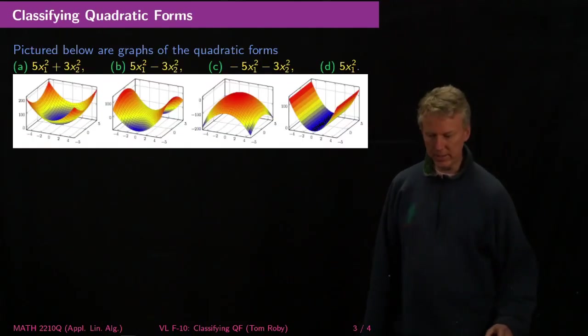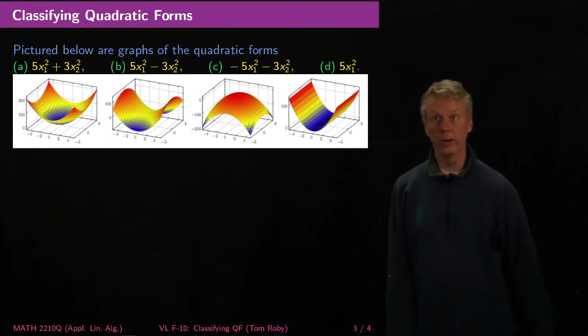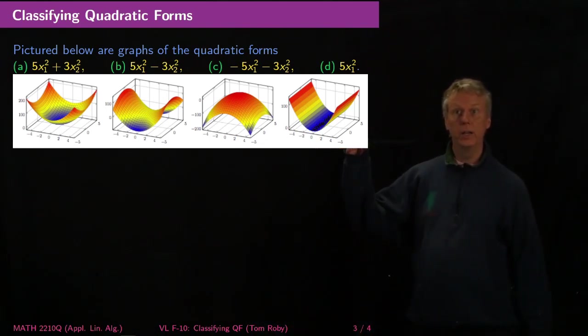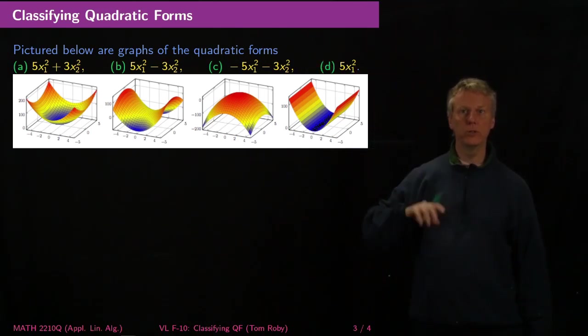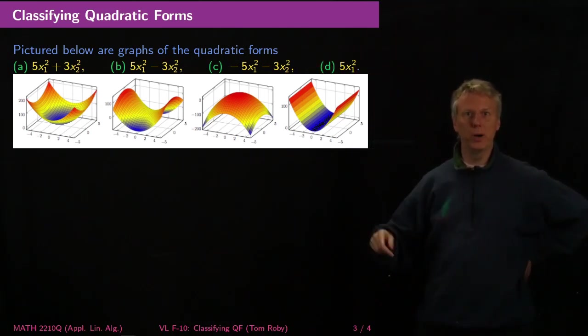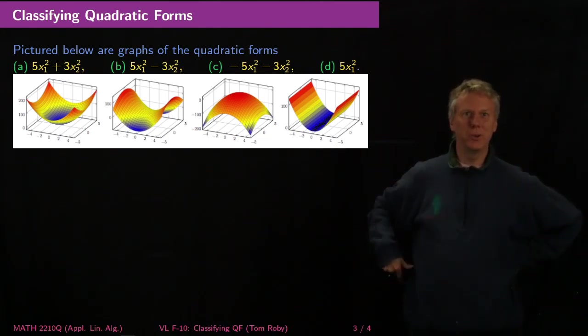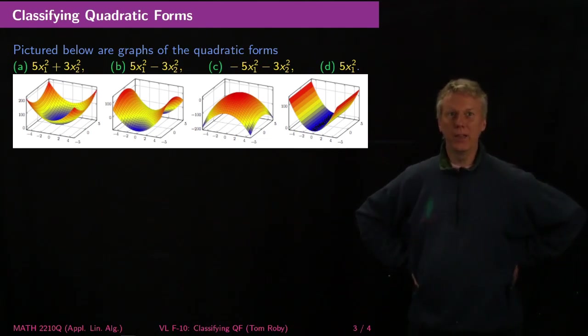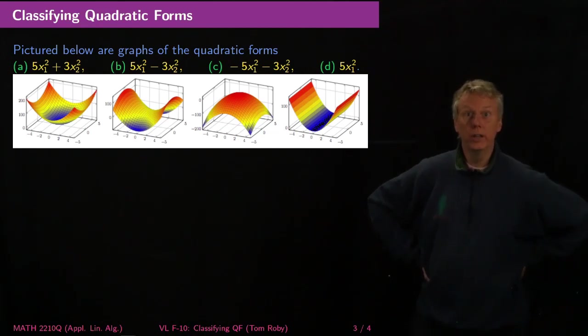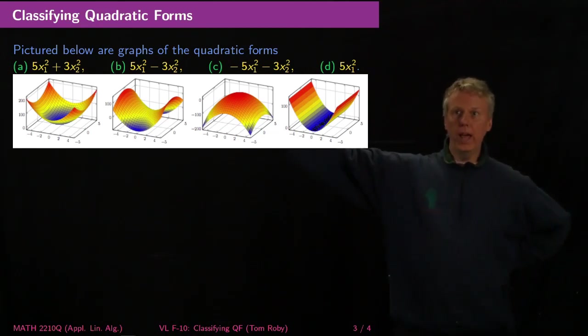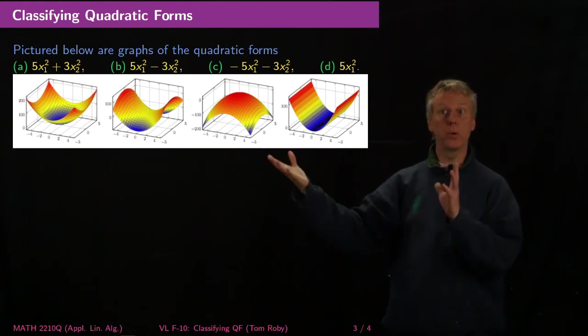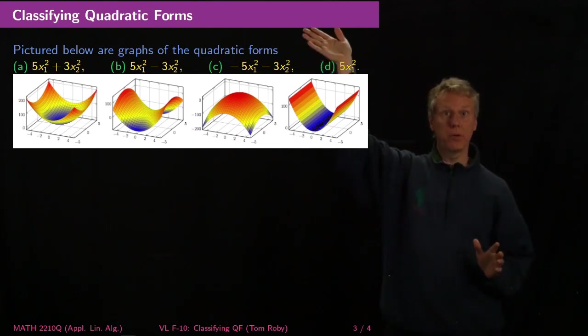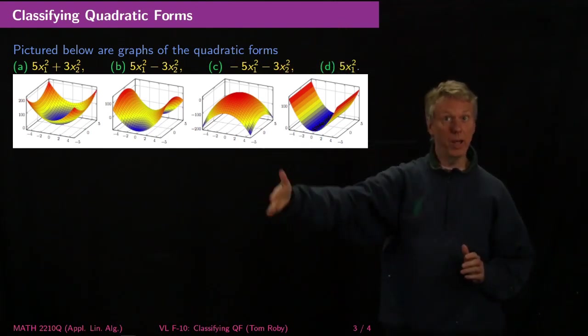Let's take a look at some pictures to help us understand what's going on. Pictured below are graphs of three quadratic forms. If you look, you'll see that the one on the left, 5x1 squared plus 3x2 squared, looks like a parabola if you sliced it this way and a parabola if you sliced it that way, both pointing up.